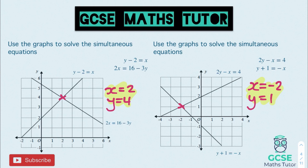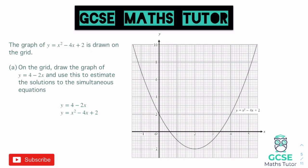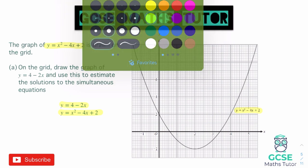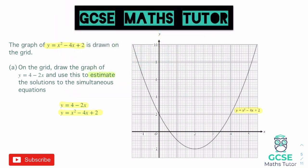Let's look at some slightly harder ones involving a quadratic. There are two different types of questions we could have here. This question says 'the graph of y equals x squared minus 4x plus 2 is drawn on the grid' and asks us to draw the graph of y equals 4 minus 2x and use this to estimate the solutions to the simultaneous equations. The key word is 'estimate' — it won't perfectly go through a whole number coordinate.